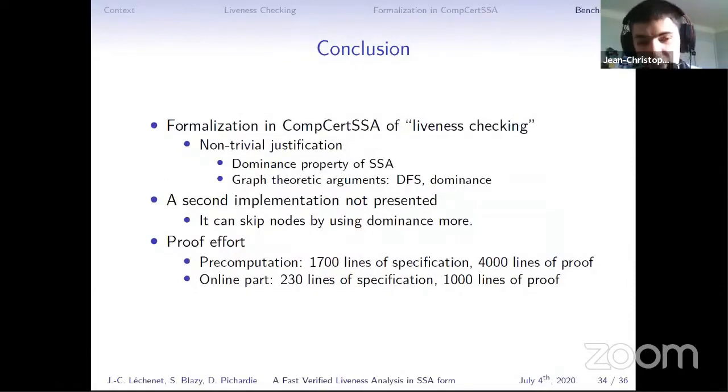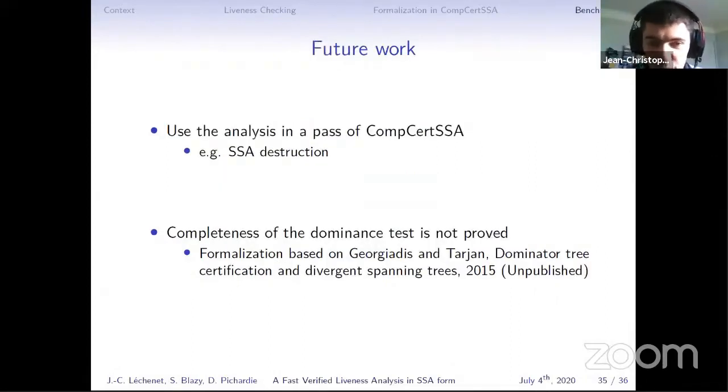So to conclude, I presented to you the formalization of an approach called liveness checking that comes with a non-trivial justification involving the dominance property in SSA and graph theory, arguments on depth-first search and dominance. There's a second implementation that is a bit more optimized that I did not present, but it's formalized too, and it's going to be noted you don't need dominance anymore. In terms of proof effort, the precomputation was really more difficult, at least more longer than the online part. So it is 2,000 lines of spec and 4,000 lines of proof, while the online part is only 200 lines of spec and 1,000 lines of proof.